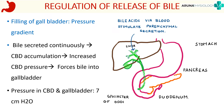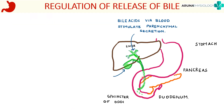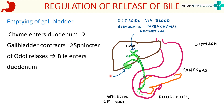For release of bile: once chyme reaches the duodenum, the gallbladder contracts and empties its contents into the common bile duct. The sphincter of Oddi relaxes, and bile is secreted into the duodenum. So gallbladder contracts, sphincter of Oddi relaxes, and bile enters the duodenum. During this emptying, the pressure in the gallbladder is around 20 centimetres of water. We now look at what factors cause contraction of the gallbladder and relaxation of the sphincter of Oddi.